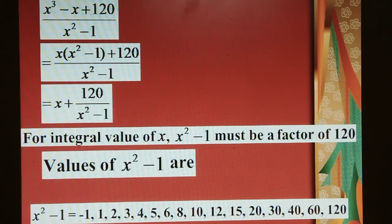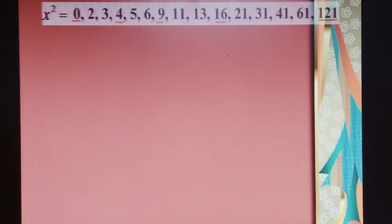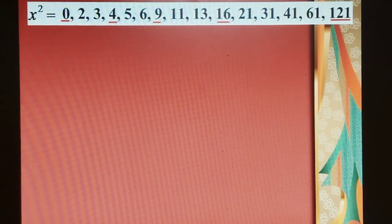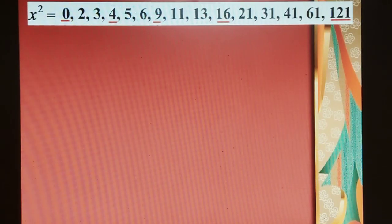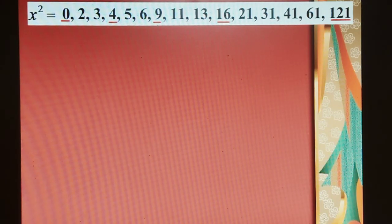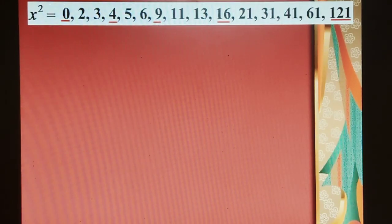So what is the value of x²? Just by adding 1 to all of them: 0, 2, 3, 4, 5, 6, 9, 11, 13, 16, 21, 31, 41, 61, and 121. So x² has these values.